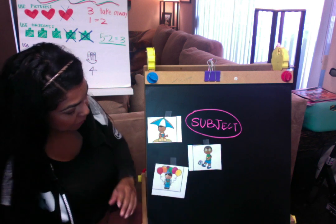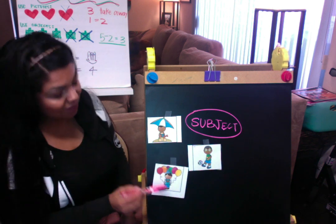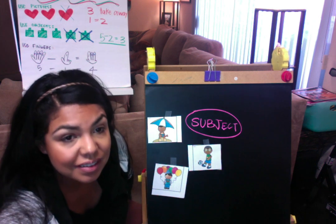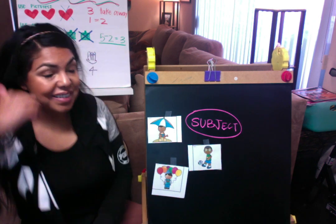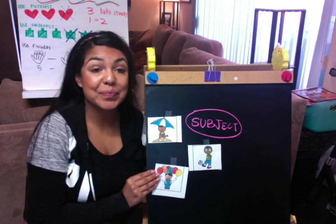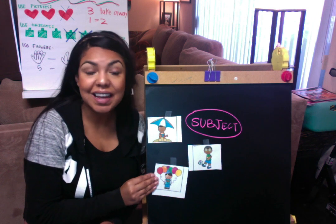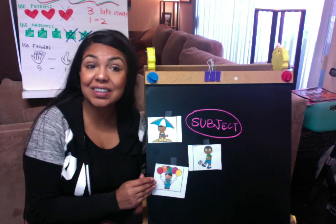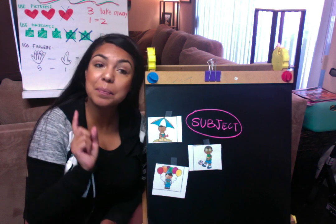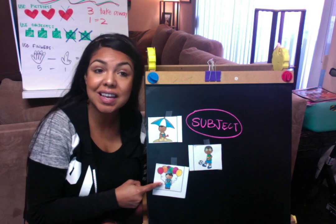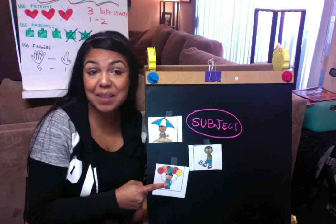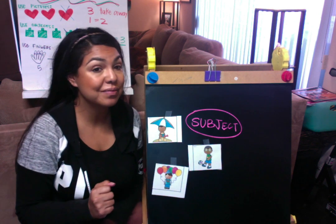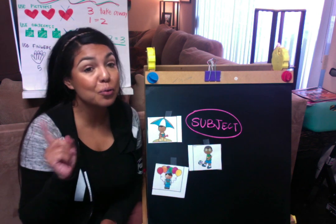What do we have here? We have a birthday party. Whose birthday party? The little boy's. So this picture is about the little boy's birthday party. So who's the subject in this picture? The little boy.